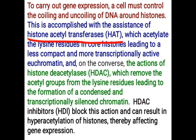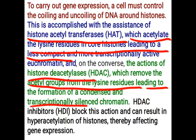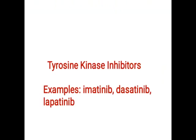Histone acetyltransferase acetylates the lysine residue on the histone, making it less compact. Histone deacetylase removes the acetyl group from the lysine residue, leading to formation of silenced chromatin — due to coiling, gene expression does not take place. So acetylation adds the acetyl group to lysine, while deacetylation removes it. If histone deacetylase inhibitors are given, they will not remove the acetyl group from lysine; hence coiling remains as it is and there is no protein synthesis.